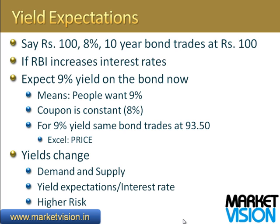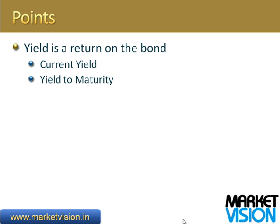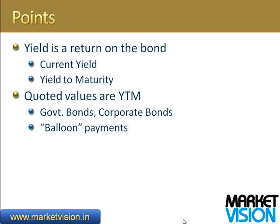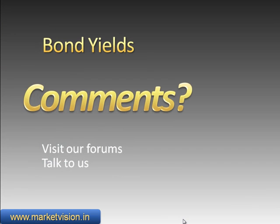There are other factors that impact bond prices, but these are largely the three big factors. In summary, we've covered current yield and yield to maturity — the quoted values in bond markets are typically yield to maturity for both government and corporate bonds. These are balloon payment bonds: unlike a home loan where you pay part of the principal and interest every month, a bond only pays you interest over its term, and at the end makes one large payment returning the principal. We'll cover topics like where bonds are quoted, how to buy and sell them, and how to calculate YTM in separate short takes. I hope this has been educative. Visit our forums, and thanks for listening.